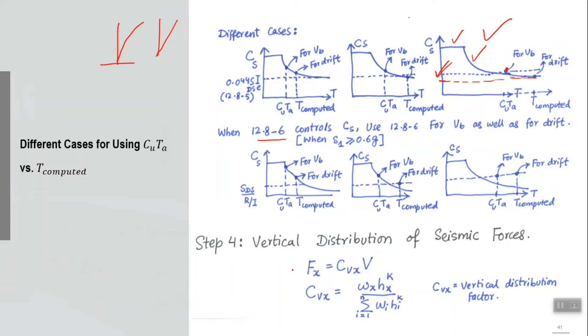For each story, any x story, the force will be C_vx times capital V. V is the total force, C_vx is telling us that how much of that total is applied to that story. C_vx for each story will be calculated using this expression: w_x is the weight of that story, h_i is from bottom to that story height, w_i is again the weight of any ith story, h_x is the height of that story, k is an empirical factor.